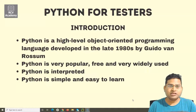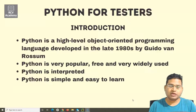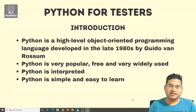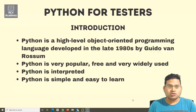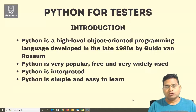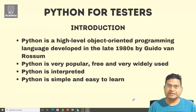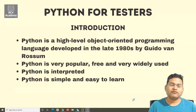As you can see on my screen, Python is a high-level, object-oriented programming language developed in the late 1980s by Guido van Rossum. It's a high-level programming language and object-oriented, which means it fulfills a lot of key capabilities that will be required for us to develop our automation frameworks using Python.